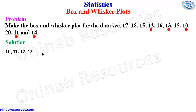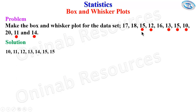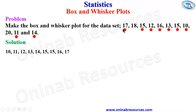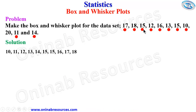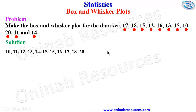We have 14 recorded. We have two 15s, so we record 15, 15. Then 16, then 17, then 18. There's no 19, so we have 20.